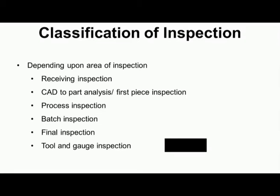The second classification of inspection is based on the area or stage where inspection is carried out: receiving inspection, first piece inspection, process inspection, batch inspection, final inspection, and tool and gauge inspection. Receiving inspection occurs when raw materials and parts are received — they are inspected for all physical parameters and composition; defective parts supplied by the supplier are rejected so they do not enter manufacturing and assembly.